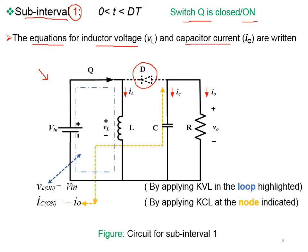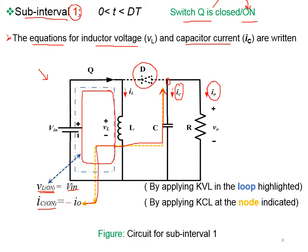During sub-interval 1 the switch Q is on, so the inductor voltage is represented as VL_on and the capacitor current as IC_on. Applying KVL to the loop, the inductor voltage expression is VL_on equals V_in. Applying KCL at the indicated node, the capacitor current relation gives IC_on equals minus I0.